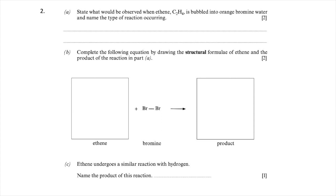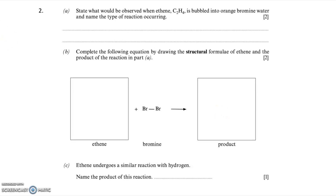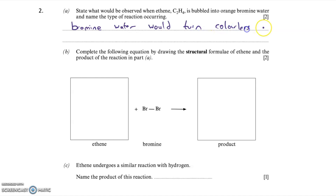Here's our second practice question — read the question, pause the video, have a go, and then we'll go through the answers. The first part asks: state what would be observed when ethene, C2H4, is bubbled into orange bromine water, and name the type of reaction occurring. Bromine water is a test for an alkene — if an alkene is present it changes from orange to colourless, so writing that the bromine water turns colourless gets you one mark. The type of reaction is an addition reaction — alkenes undergo addition reactions, which involves breaking the double bond and a single product forming.